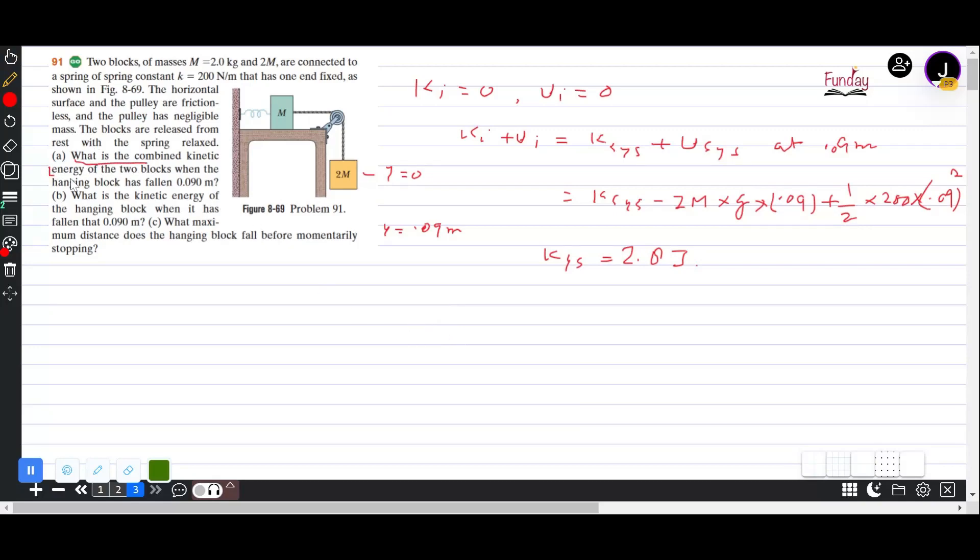The second question is, what is the kinetic energy of the hanging block? You see, kinetic energy of the system is for 3M, which is the M block and 2M mass.